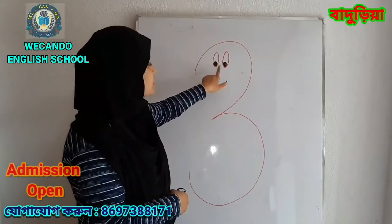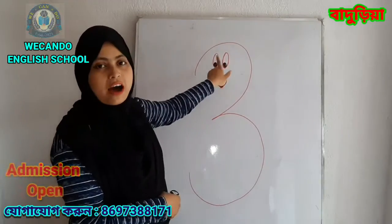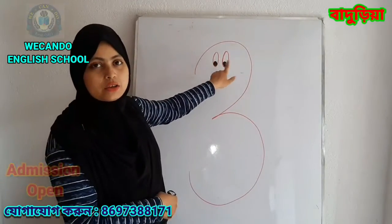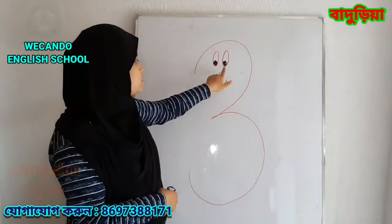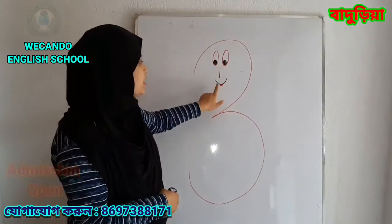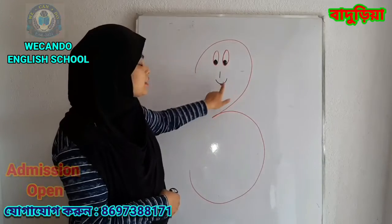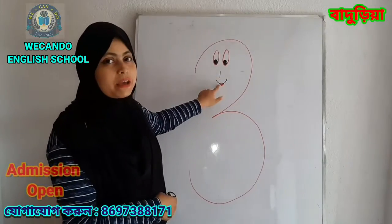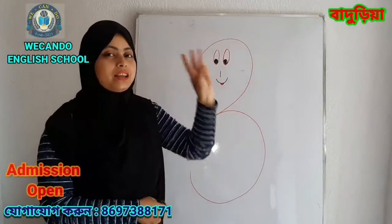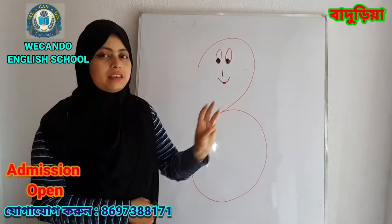How many do I have here? 2, 3 — and including the nose it will become 3. Thank you.